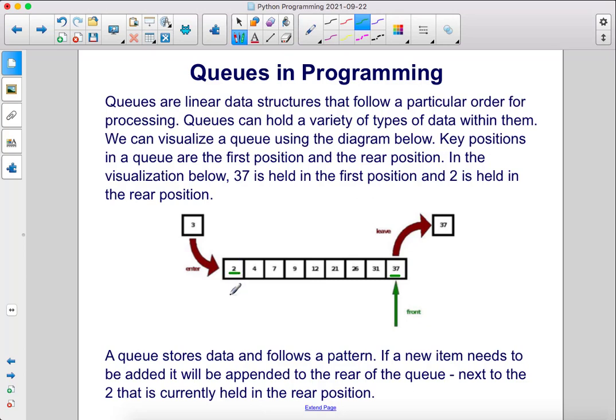A queue stores data and follows a pattern. If a new item needs to be added, it will be appended to the rear of the queue, here, next to the 2 that is currently held in the rear position.